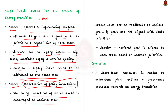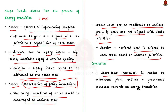And fourthly, the author says that states could also act as roadblocks to national goals, because some national goals are not aligned with state priorities. So the author advocates that national goals should be aligned to each state based on the state's priorities. These are the four critical functions needed to be carried out for effective energy transition. To conclude, a state-level framework is needed to understand the plans, actions and governance processes towards an energy transition. The effective implementation of such a state-level framework will enable us to expedite energy transition. In this discussion, we have seen the importance of Indian states in the process of energy transition and what steps could be taken to include states into that process.